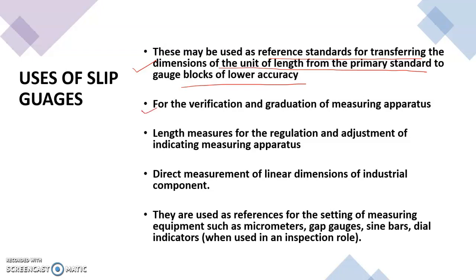The second one is for verification and graduation of measuring apparatus. For example, we can check a micrometer using slip gauges of known value and we can adjust the micrometer dials and scales. Next is length measures for regulation and adjustment of indicating measuring apparatus.